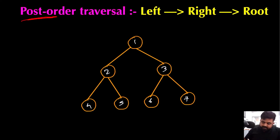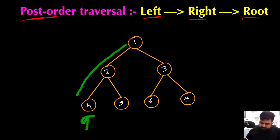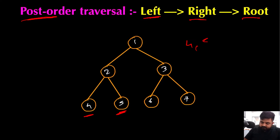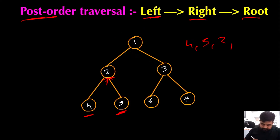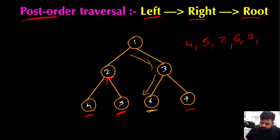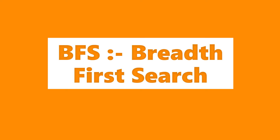For post-order traversal, we follow left, right, then root. We visit the leftmost node first, which is node 4, then the right node 5, then root node 2. After that we don't visit node 1 yet because its right subtree hasn't been visited. We go right, visit node 6, then node 7, then their root node 3, and finally the main root node 1.